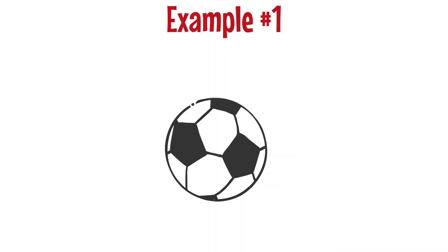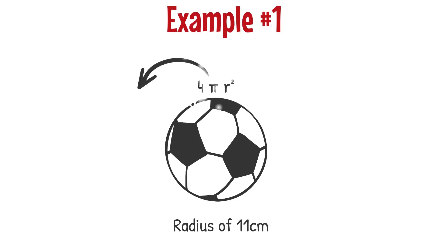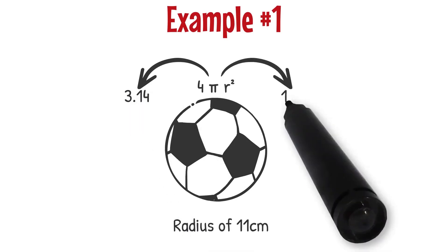Let's take a look at example number one. Let's say I have a soccer ball that has a radius of 11 centimeters. First, I want to start off by writing the formula used to calculate the surface area of a sphere: 4 pi r squared. Now I'm going to plug in everything that I know about this particular sphere. 4 stays the same, pi is going to be written as 3.14, and my radius r is going to be written as 11.